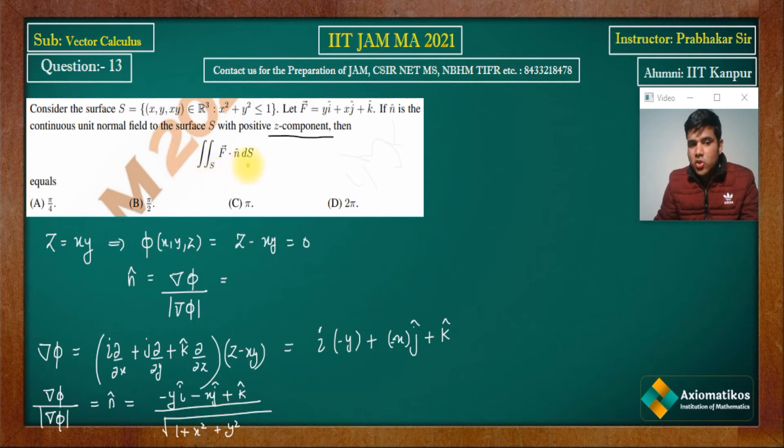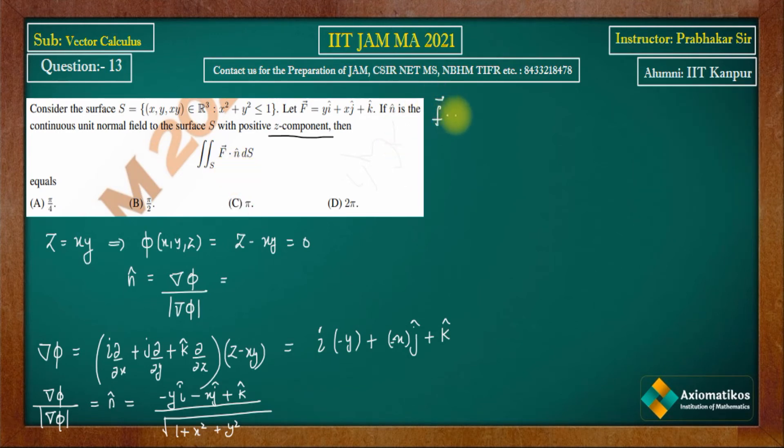If you take the magnitude of this, now f vector dot n cap we calculate. F vector dot n cap. So how much will it be? If you take the dot product, then minus y² minus x² plus 1 upon under root 1 plus x² plus y². That is, 1 minus x² minus y² over under root 1 plus x² plus y².